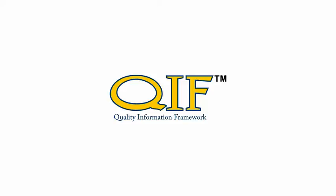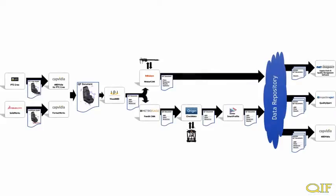The ANSI Standard Quality Information Framework, known as QIF, is a feature-based ontology of manufacturing quality metadata built on XML technology and semantically linked to the CAD model.